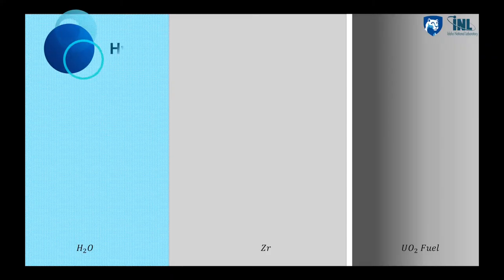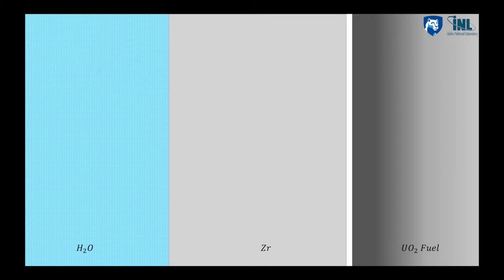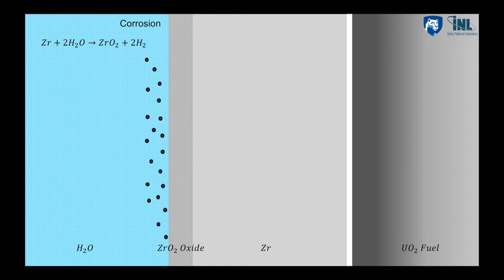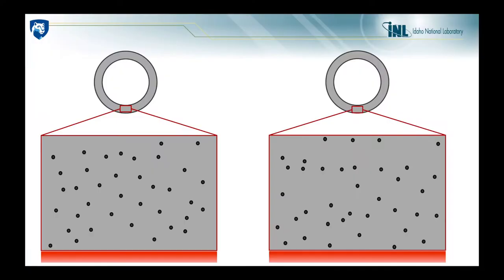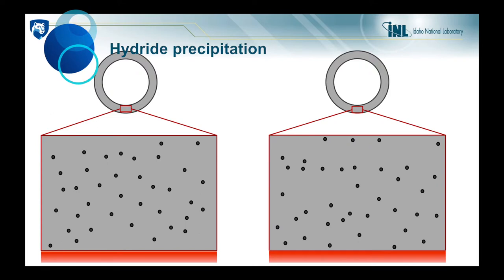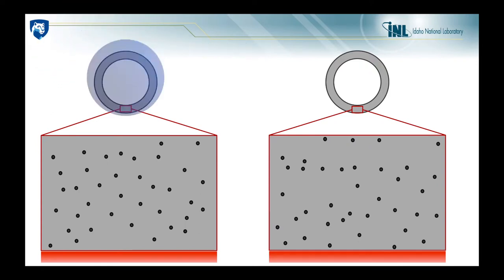Inside the reactor, the zirconium cladding is the barrier between the fuel and the surrounding water. Despite its great properties, the zirconium corrodes and forms an oxide layer. Hydrogen atoms are a byproduct of the reaction and some of them are picked up by the cladding. If we look at a magnified cross-sectional view of the cladding, we can see the hydrogen atoms in solid solution at high temperature.